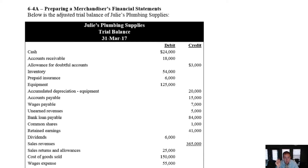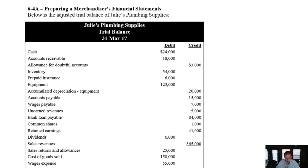In this group of videos, we're going to learn how to prepare a merchandiser's financial statements. Those are a little bit different from the ones we learned in Chapter 1 of this course, where we looked at service-oriented companies. This is a company that sells stuff, and the income statements look a little bit different. The rest of the financial statements should be pretty familiar and similar to what we've seen.